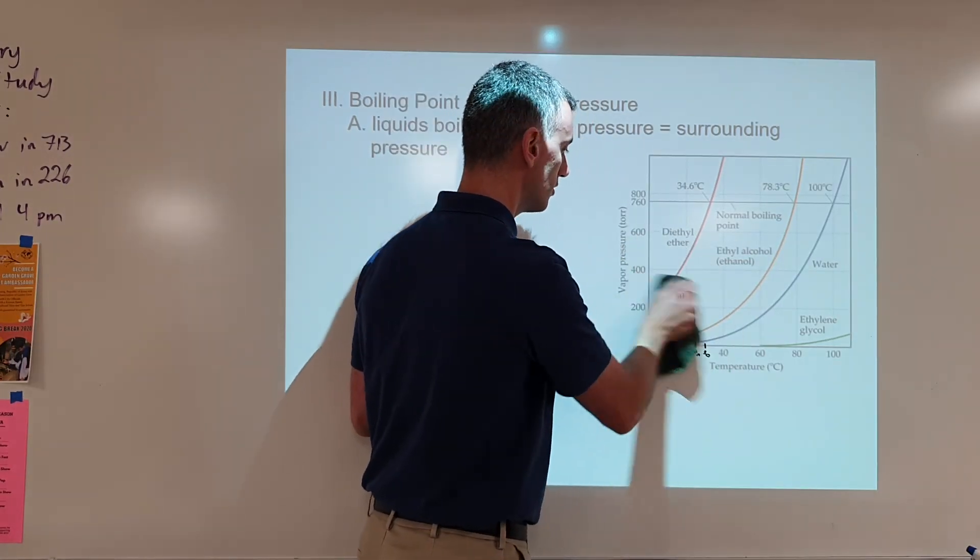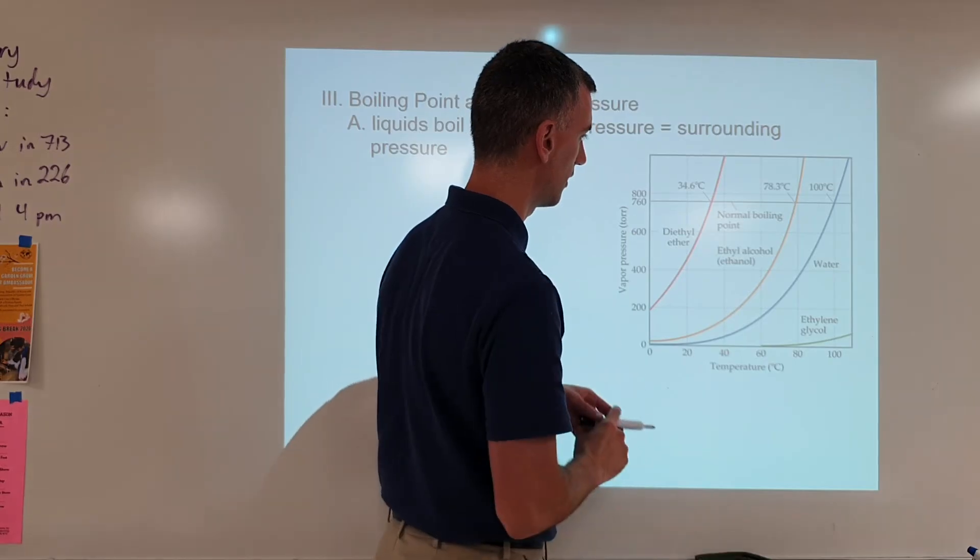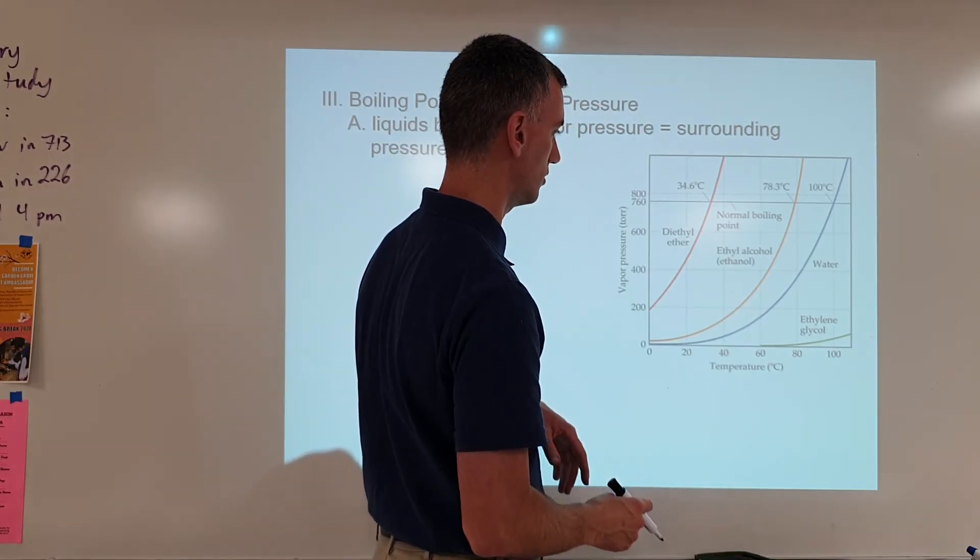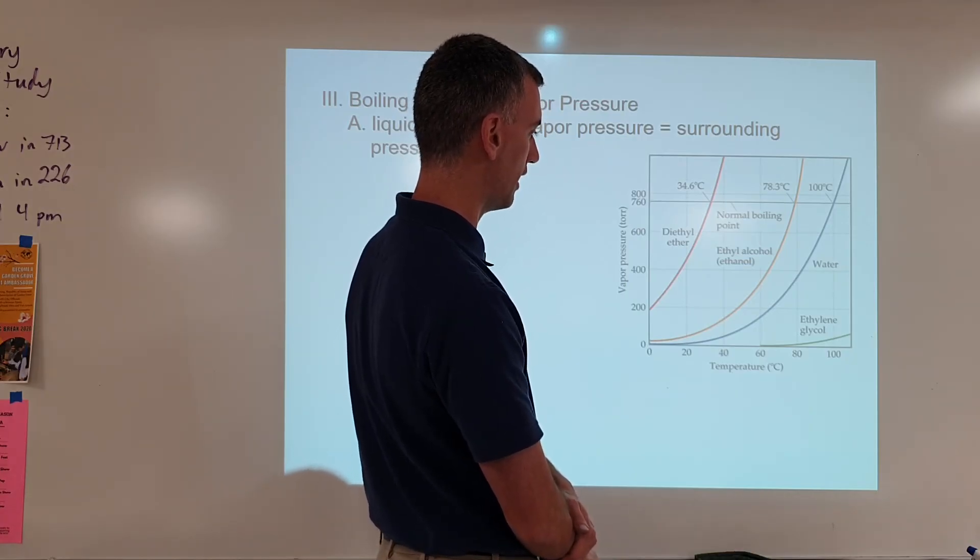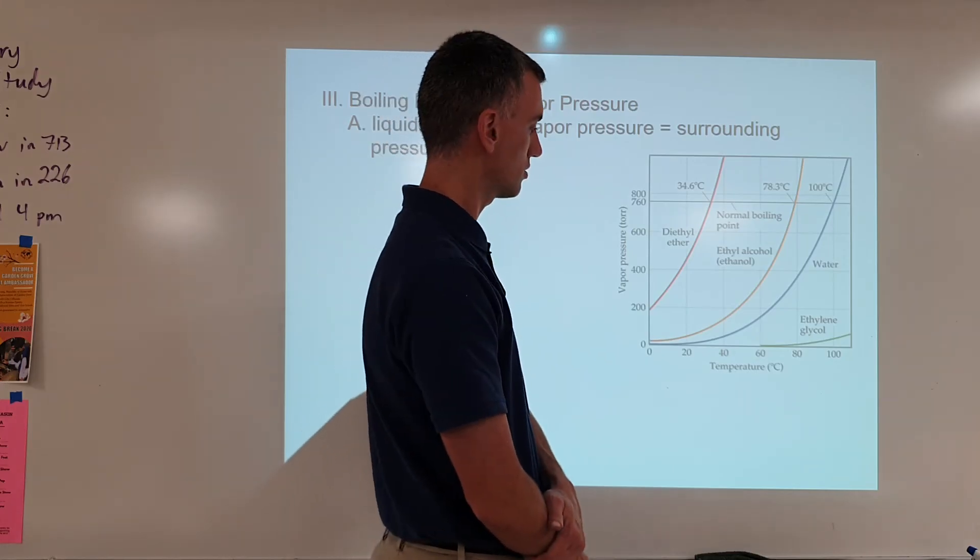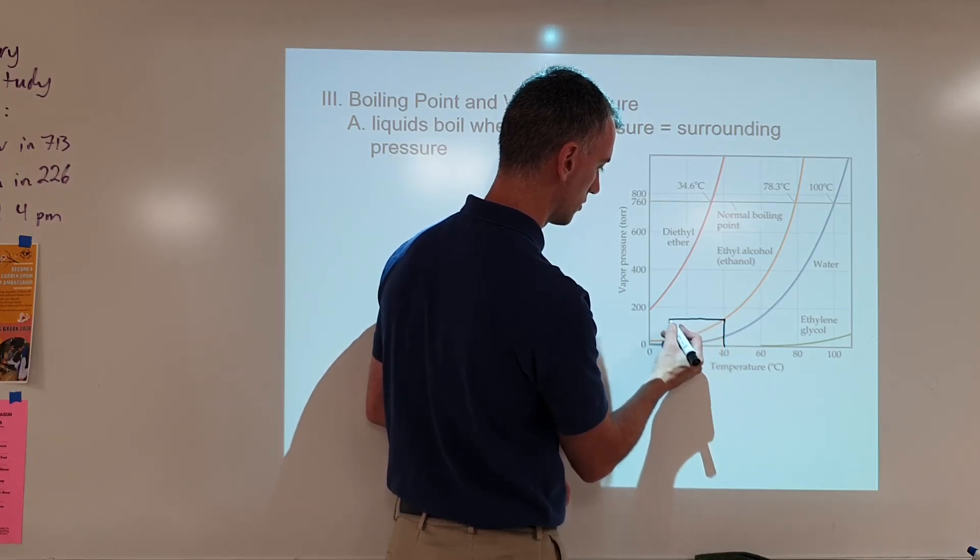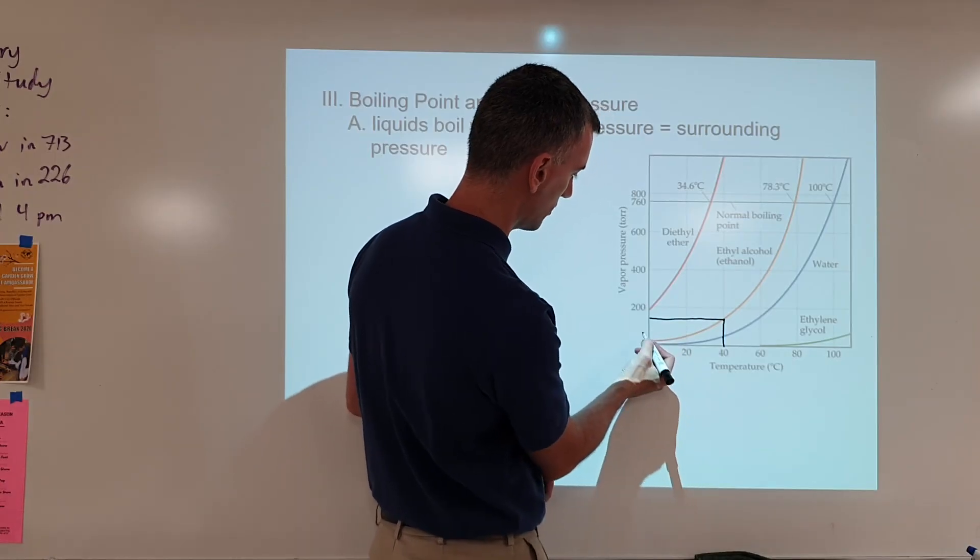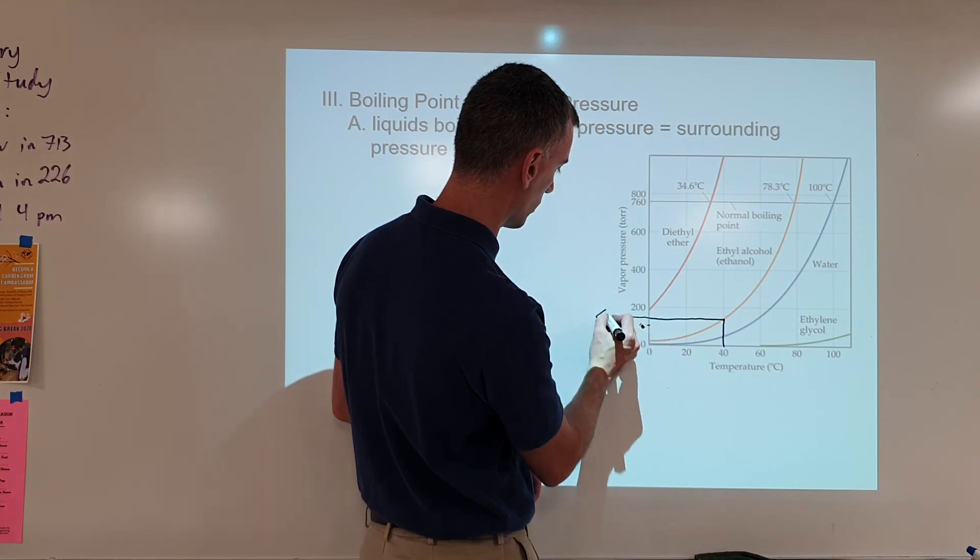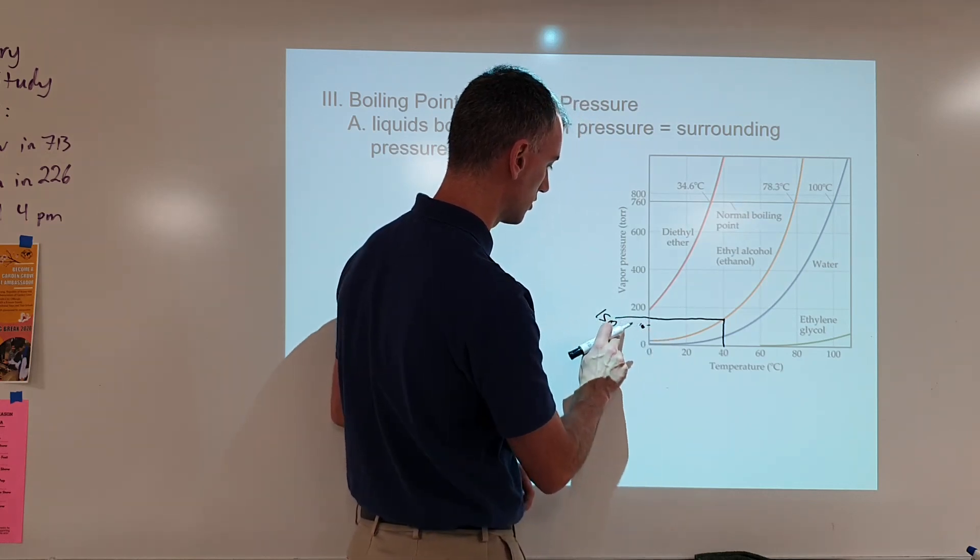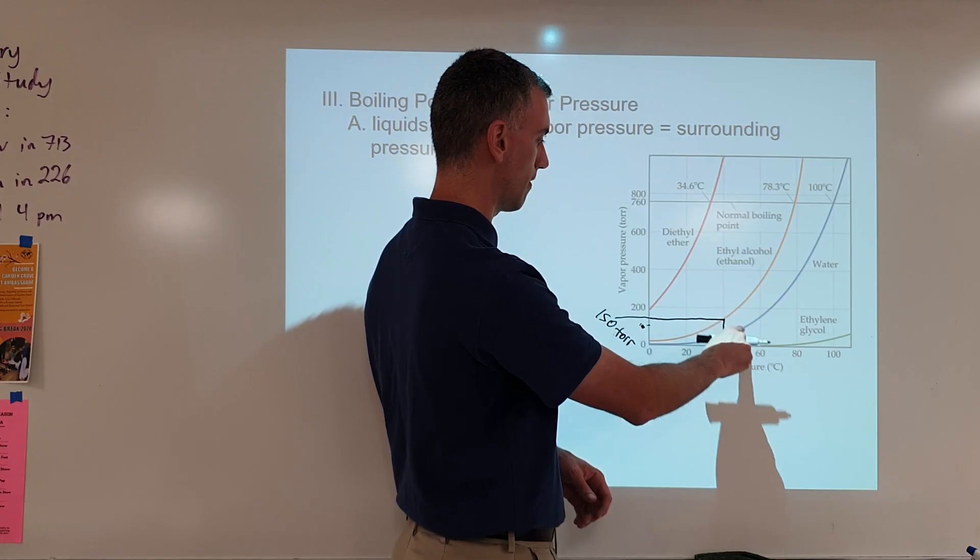Let's do a third example, and you, the viewer, I'll set up the example, pause it before you see the answer, and then you can see if your answer's correct. I'll do ethyl alcohol. What pressure do you need to make ethyl alcohol boil at 40 degrees Celsius? So, I find 40 degrees Celsius, trace it up to the ethyl alcohol line, trace it over, trying to keep it more or less straight. Now, let's see, so that's zero, that's 200, so 100 must be here. So, this looks like it's about 150 torr would be the pressure necessary to make ethyl alcohol boil at 40 degrees Celsius.